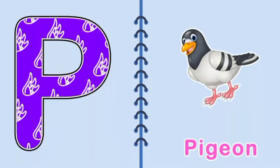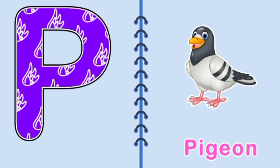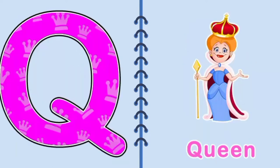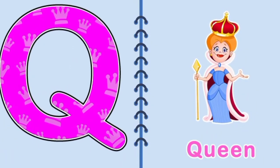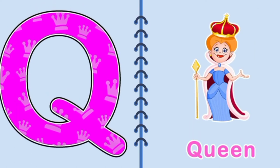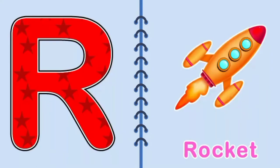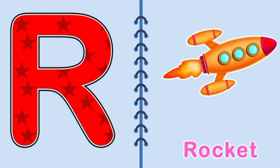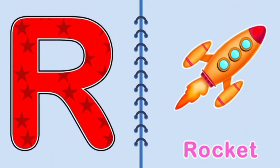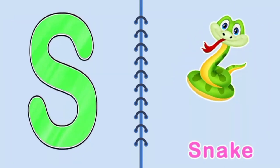P, P, Pigeon, P for Pigeon. Q, Q, Queen, Q for Queen. R, R, Rocket, R for Rocket.